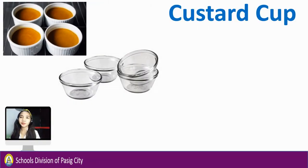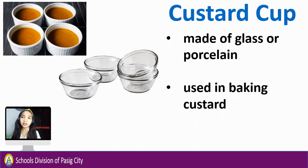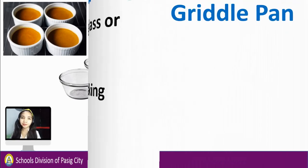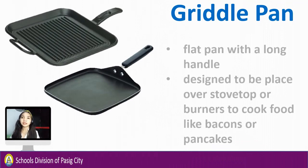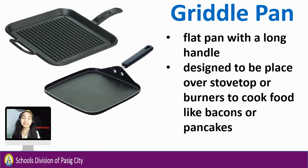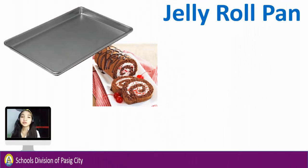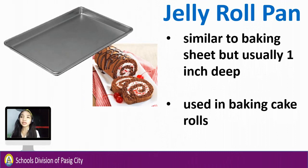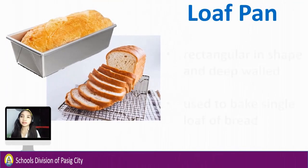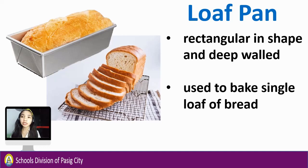Custard cup is either made of glass or porcelain, used in baking custard. Griddle pan is a flat pan with a long handle, designed to be placed over a stovetop or burner to cook food like bacon or pancakes. Jelly roll pan is similar to a baking sheet but usually 1 inch deep, used in baking cake rolls. Loaf pan is rectangular in shape and deep-walled, used to bake a single loaf of bread.